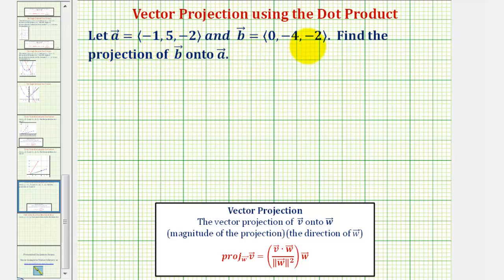We're given vector A and B in component form and asked to find the projection of vector B onto vector A. So we use the notation, projection of vector B onto vector A.